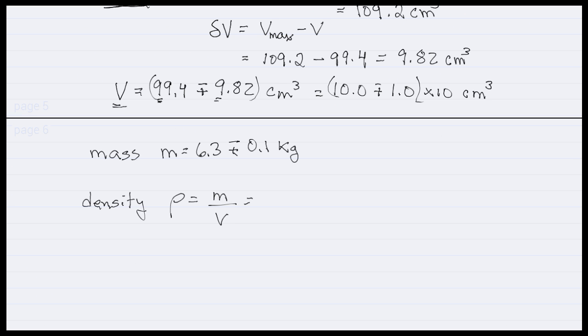So in our case, we can actually just plug in some numbers here. We can take the mass to be 6.3 and the volume to be the 99.4 we got before. We could use the 100 here, but let's use the 99.4 for now. And I believe you should get 0.0636. I'm hoping I've done that right. And the units, so in our numerator we get kilograms. In our denominator it's centimeters cubed. So our units for density are kilograms per centimeters cubed.